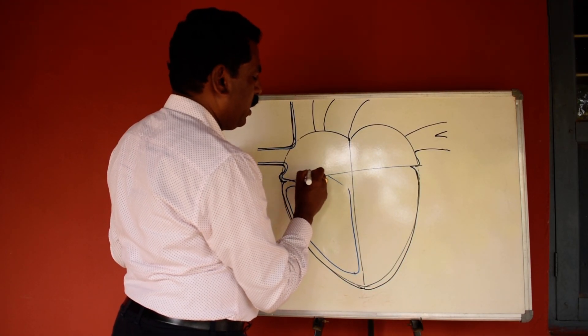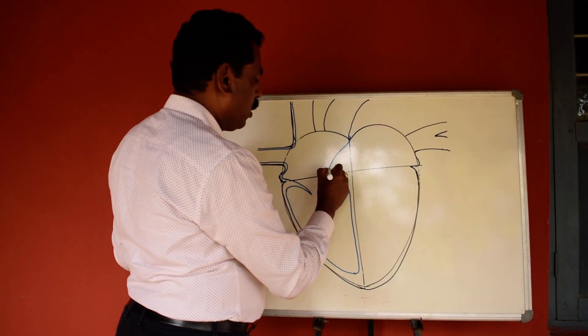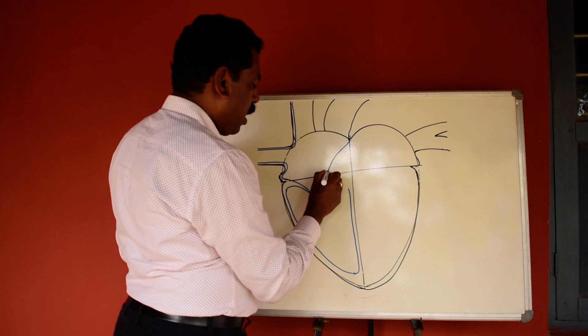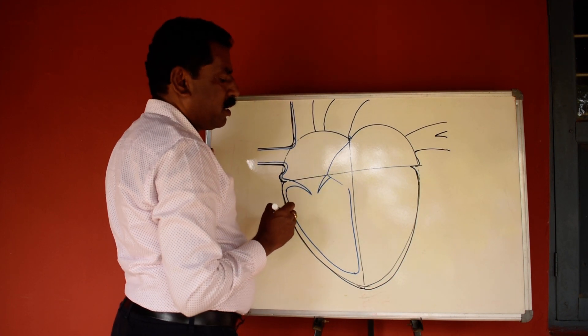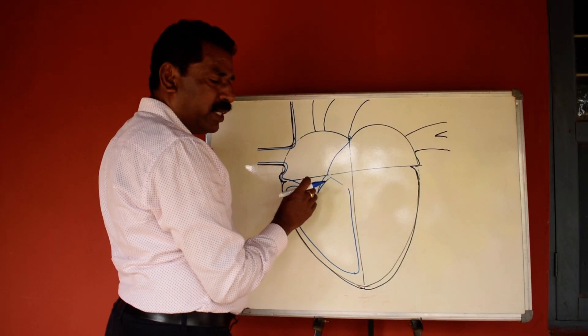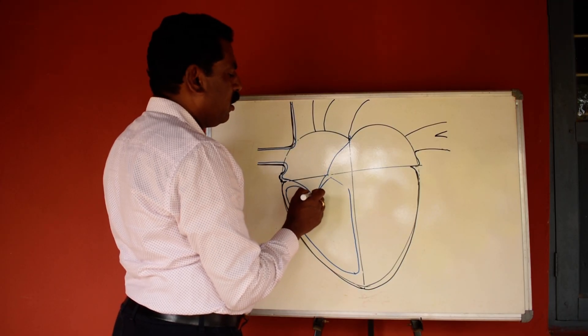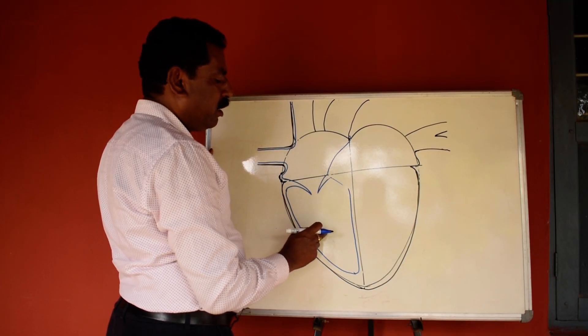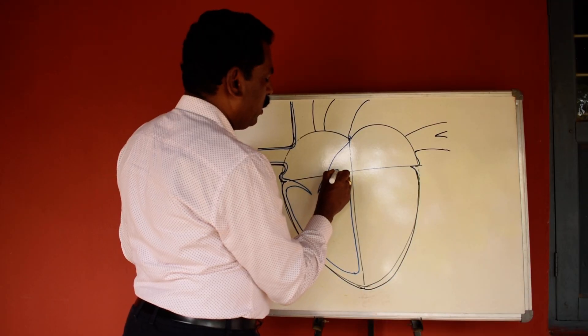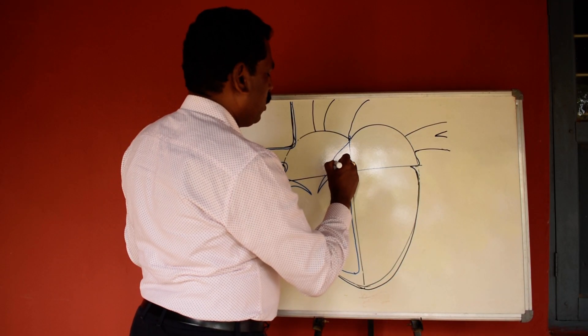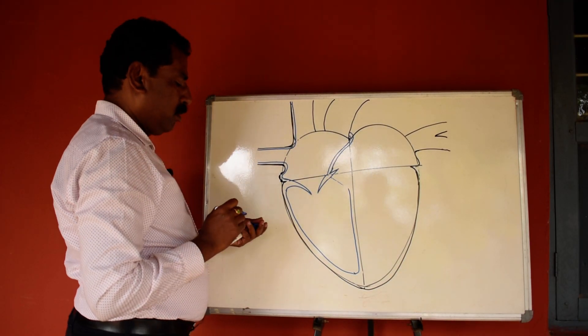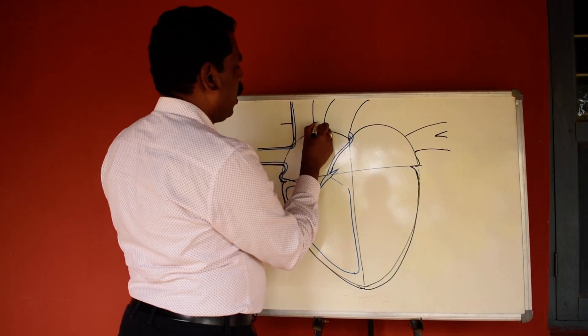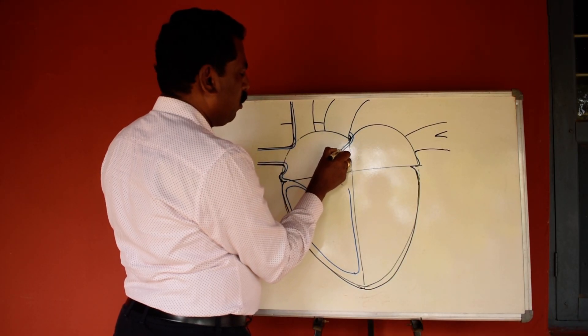So here there is a valve. So from here I draw a line. And this is the structure, the tricuspid valve, through which carbon dioxide-rich blood enters into the right ventricle. So this continues as another line through the right ventricle. I will draw one more line here to join this line.